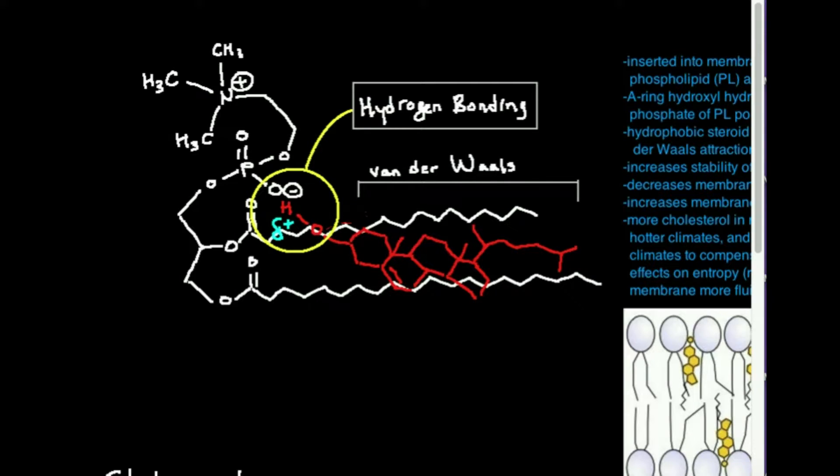What I want you to notice here is specifically this is position one and two, and we know on phospholipids, on positions one and two, we have these ester linkages to the fatty acids. These little zigzag lines, recall from previous videos, those are the fatty acid tails that we refer to.